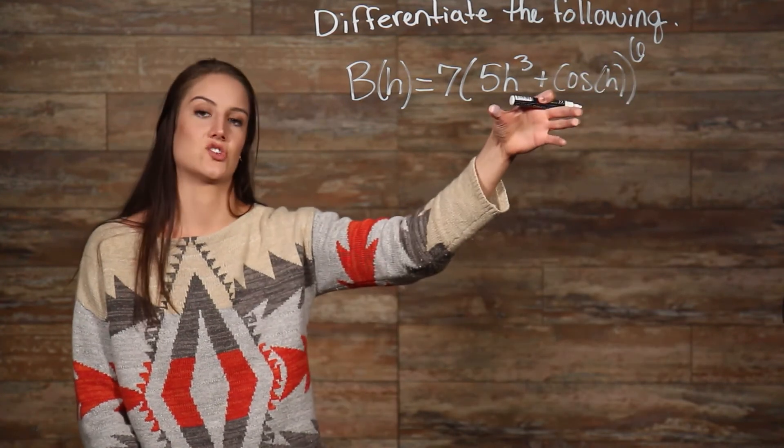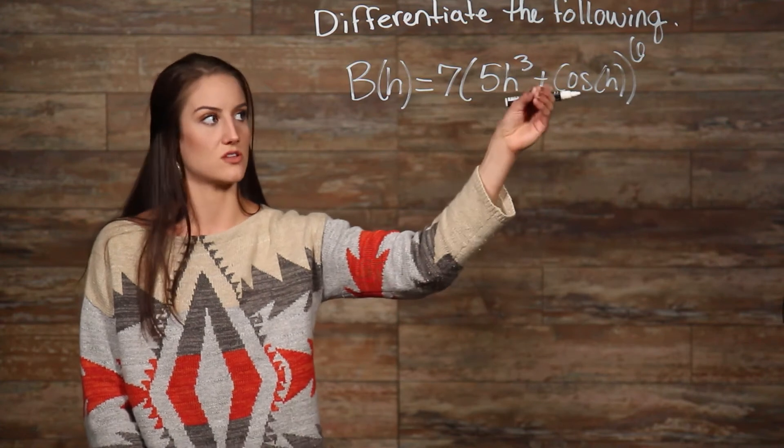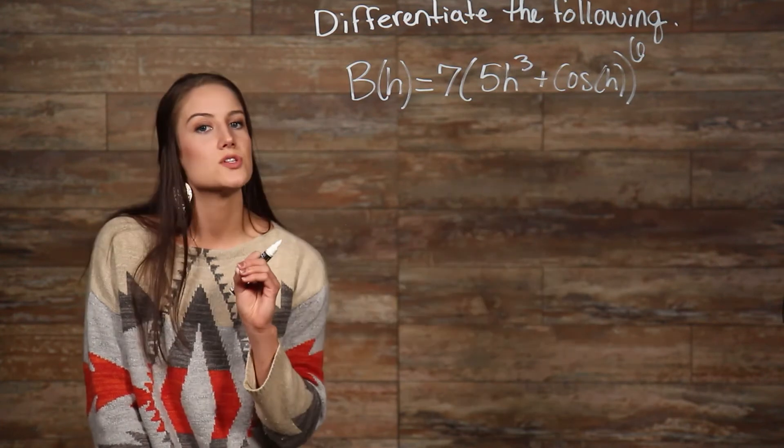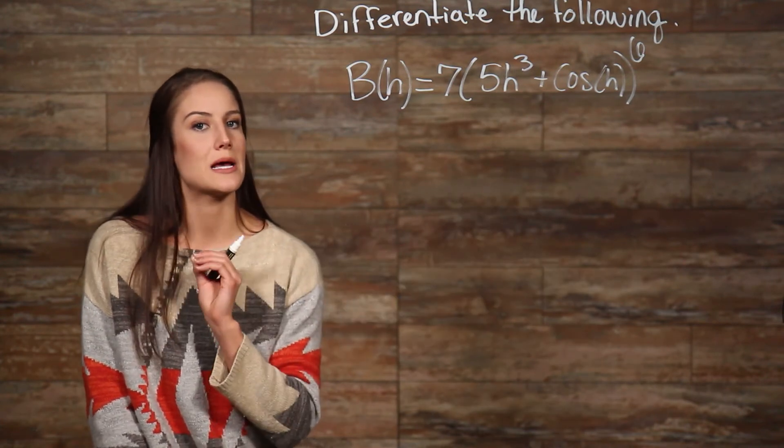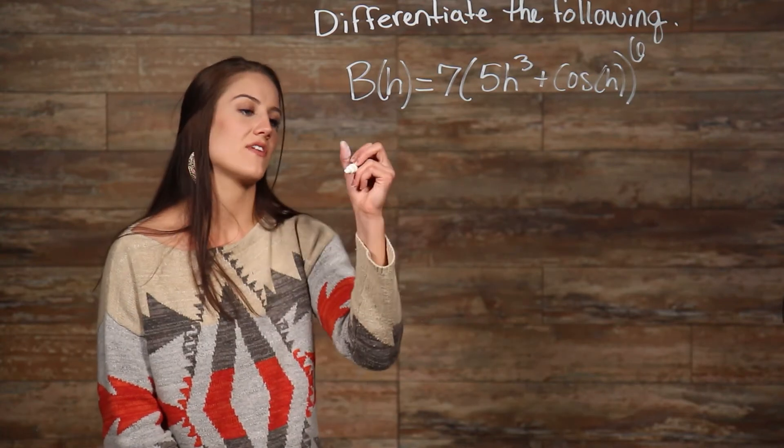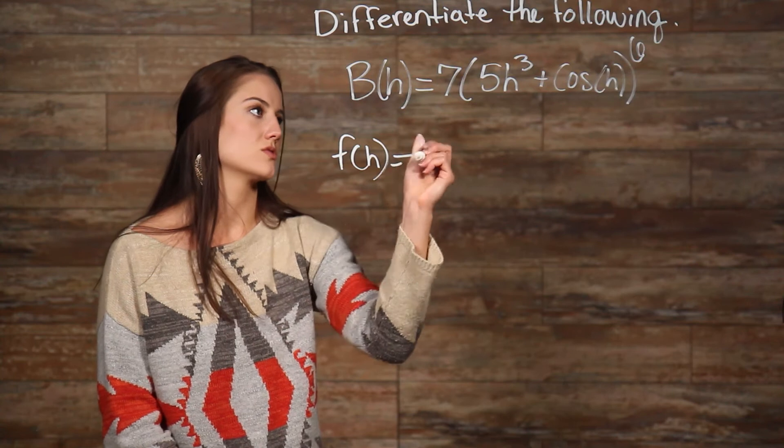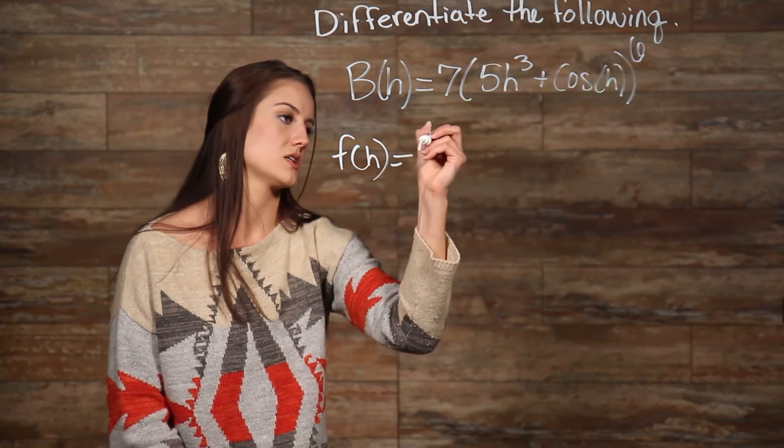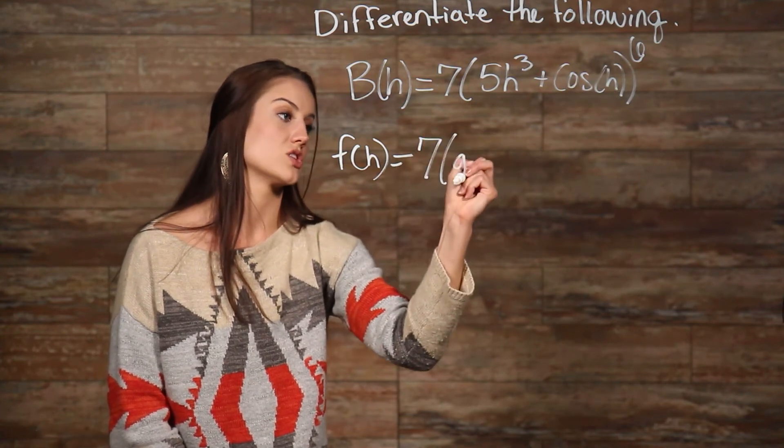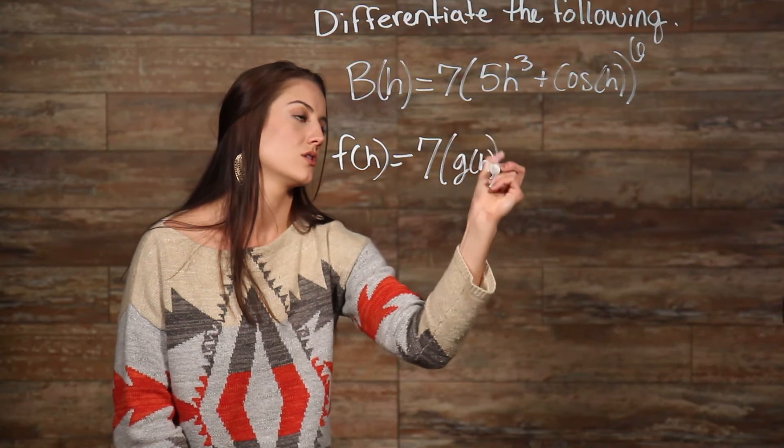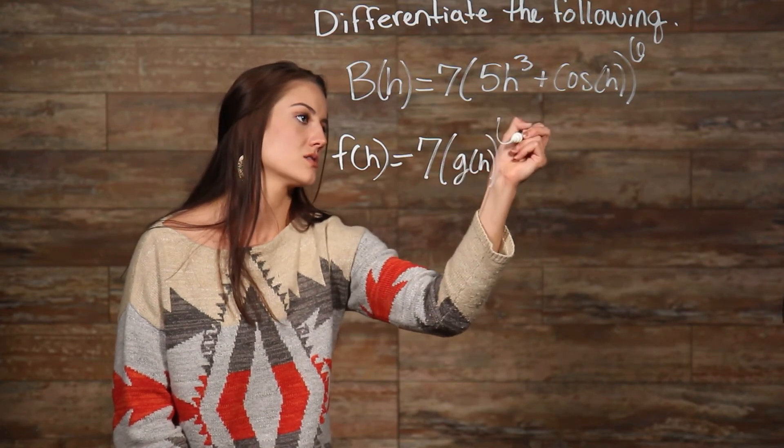Well, we have 7 times everything on the inside, all to the power of 6. Then we have the inside function here, which is 5h to the third plus cosine of h. So we can break this up into two functions.